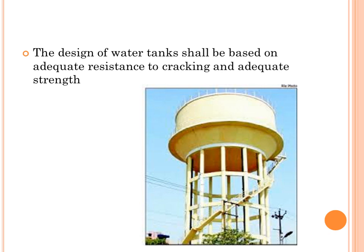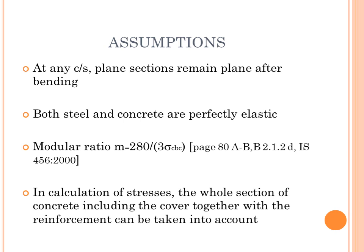The design of water tanks shall be based on adequate resistance to cracking and adequate strength. Calculation of stresses shall be based on the following assumptions: at any cross section, plain sections remain plain after bending; both steel and concrete are perfectly elastic; and the modular ratio has the value given in IS 456 as M = 280 / (3 × σcbc), where σcbc is the permissible compressive stress of concrete.